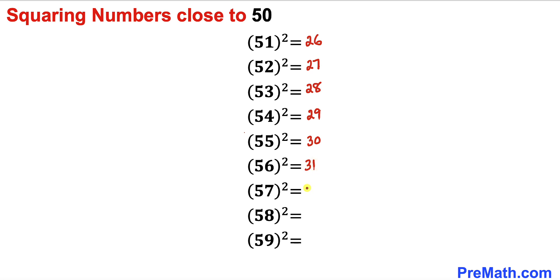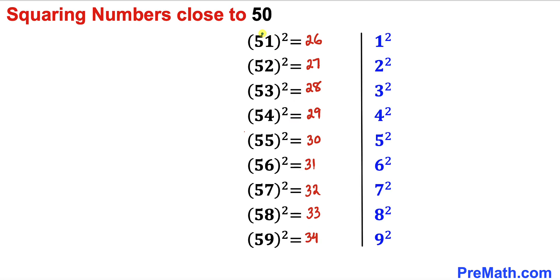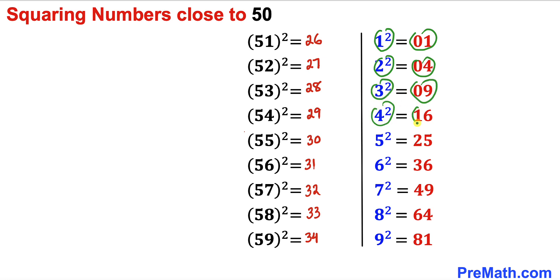Here's the next step. Let's focus on 51. The difference between 51 and 50 is 1. Likewise, the difference between 52 and 50 is 2, as you can see over here. The difference between 53 and 50 is 3, and so on. Now 1 squared is 01, 3 squared is 09, 4 squared is 16, and the list goes on.